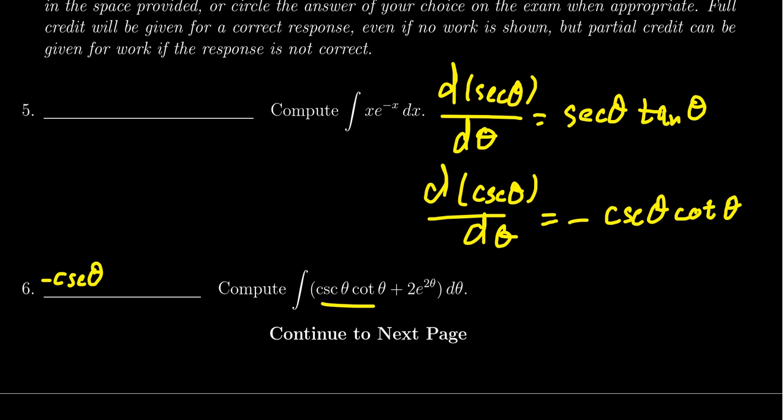Now as we look at the next one, two e to the two theta. If you took the derivative of e to the two theta with respect to theta by the chain rule, this gives us two e to the two theta, that's exactly what we have right here. So we see that the second piece is going to be e to the two theta.